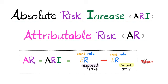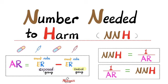Also watch my video on the attributable risk or the absolute risk increase, which is the event rate in the exposed group minus the event rate in the control group — the opposite of absolute risk reduction. The reciprocal of the attributable risk is the number needed to harm.